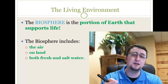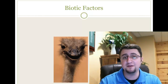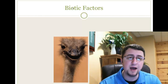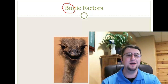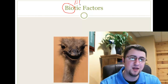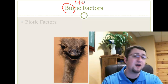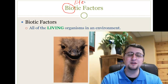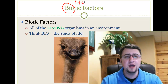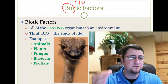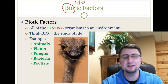In those places that are supporting life, there are what we call abiotic and biotic factors. The root word 'bio' means life — biology is the study of life. So biotic factors are all of the living organisms in an environment. That can include animals, plants, fungus, bacteria, and protists. Basically anything that is living is a biotic factor.